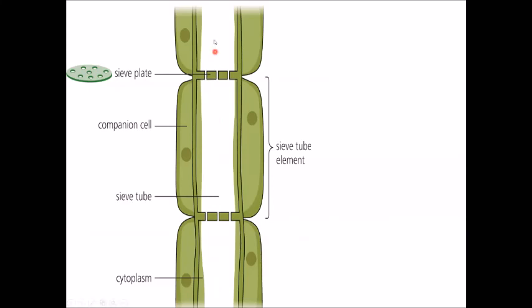Because it is hollow the cell needs to be living because it uses a lot of active transport, so the companion cell here either side of it actually shares cytoplasm with the sieve tube and that whole section is called the sieve tube element.